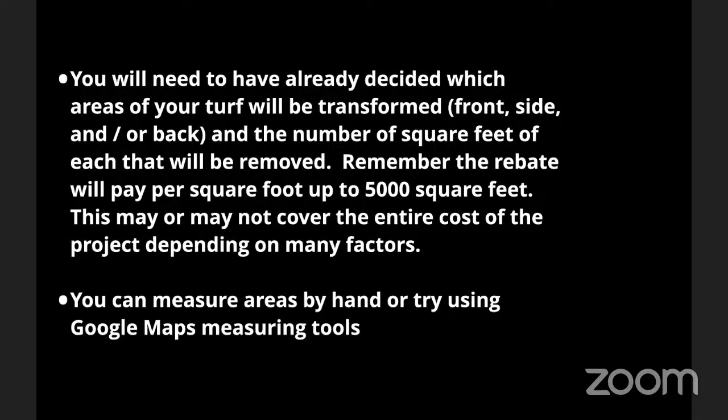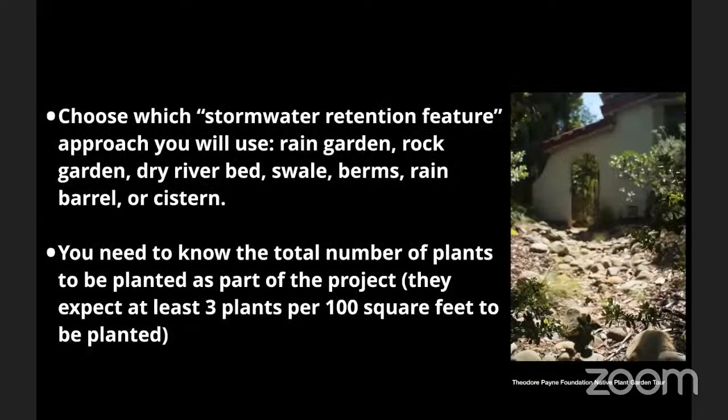If you can measure the areas you're replacing by hand with a measuring tape, that gives the most accurate results. However, if it's a very strangely shaped area and the math would be complicated, you can look up your address on Google Maps, go to the satellite image view, zoom in, and right-click to find the 'measure' function. You can then literally connect the dots on the aerial photo, and when you close the shape, it shows you the area. That's a useful trick for oddly shaped spaces.